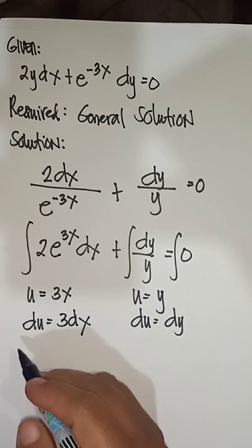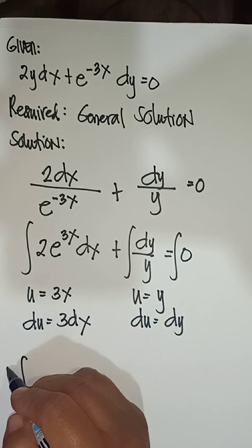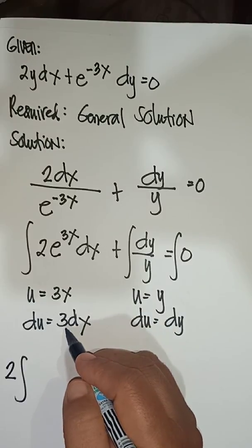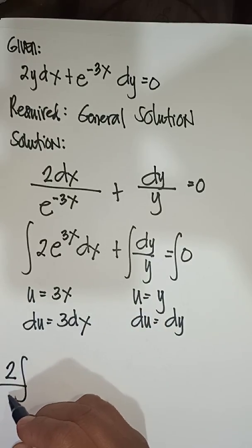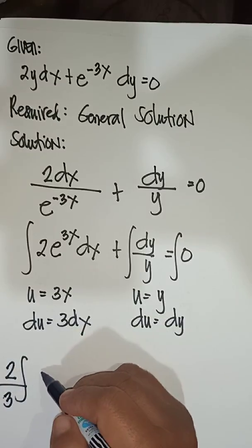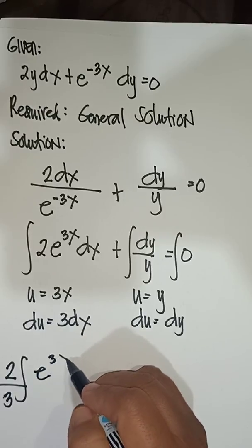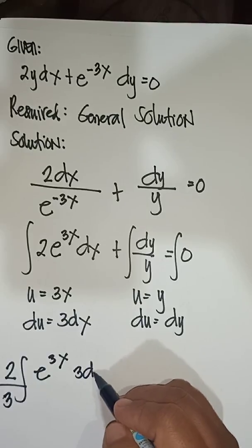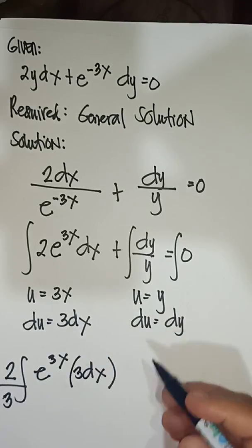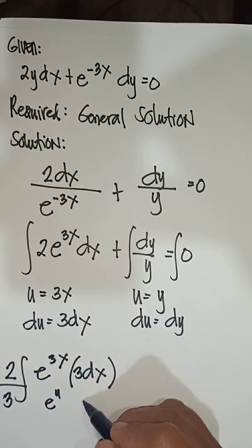From that, you will have—you bring out 2, du is 3dx, so multiply by one-third, so we get two-thirds. e^(3x), then we will have 3dx, so this is now a form of e to the u du.